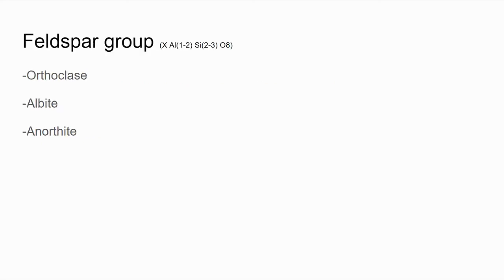As we were already talking about the feldspar group, let's have that be the first mineral group we discuss. The overall formula for the feldspar group is X Al(1-2) Si(2-3) O8.